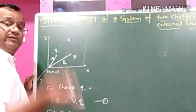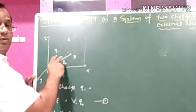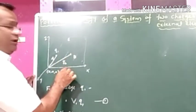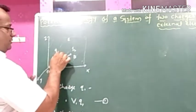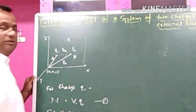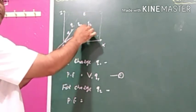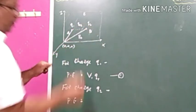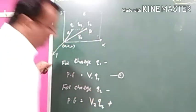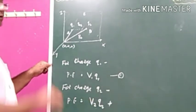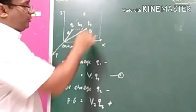But the charge q1, which is also present, also produces a potential at point B. So here we need to find the potential energy due to the external electric field AND due to the charge q1, for the charge q2. The distance between the first and second charge is r12. The value of electrical potential due to the external field at point B is V2.